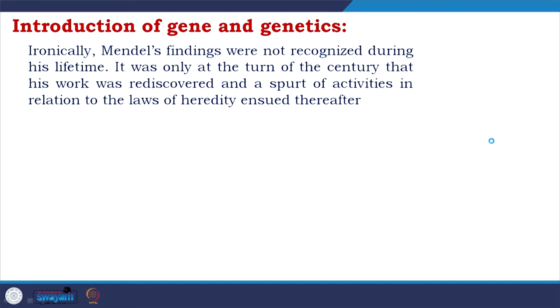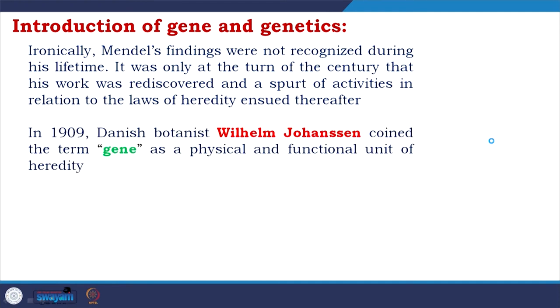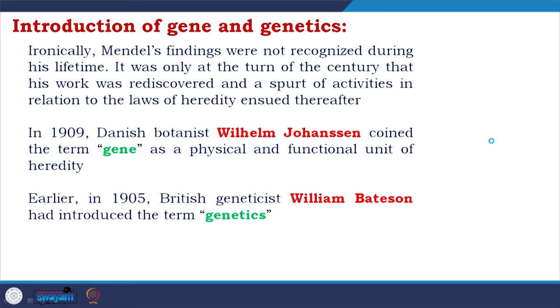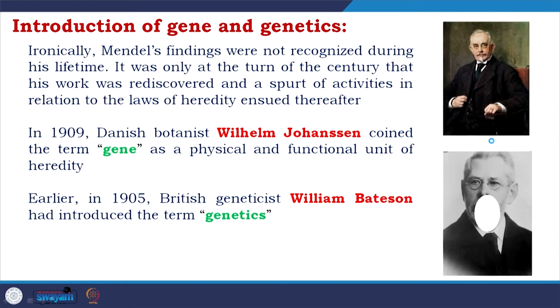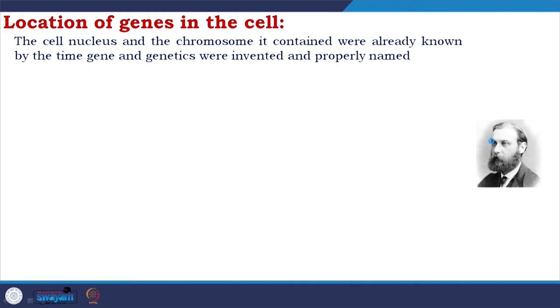Ironically, Mendel's findings were not recognized during his lifetime — he did very notable work but nobody understood it at that time. It was only at the turn of the century that his work was rediscovered. In 1909, Danish botanist Wilhelm Johannsen coined the term 'gene' as a physical and functional unit of heredity. Earlier, in 1905, British geneticist William Bateson had introduced the term 'genetics.' The cell nucleus and the chromosomes it contained were already known by the time 'gene' and 'genetics' were properly named.